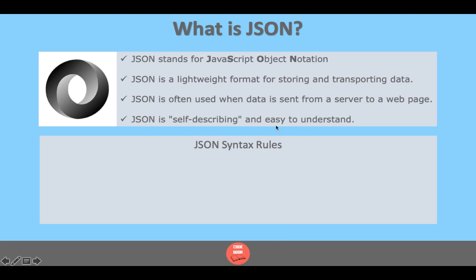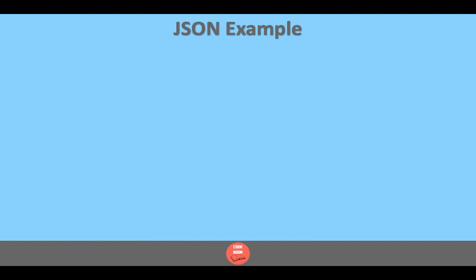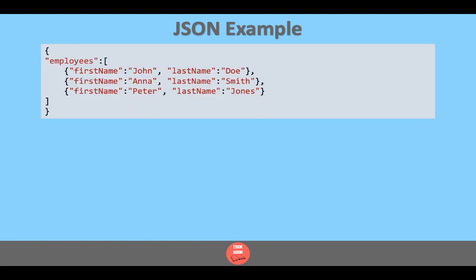There are some syntax rules for writing a JSON object. Data is in name or key-value pairs, data is separated by commas, curly braces hold objects, and square brackets hold arrays. For example, in a JSON data object, curly braces hold the data, and an employees array is passed inside it. The array consists of objects with first name and last name of users, such as John and Doe, written in double quotes as key-value pairs.